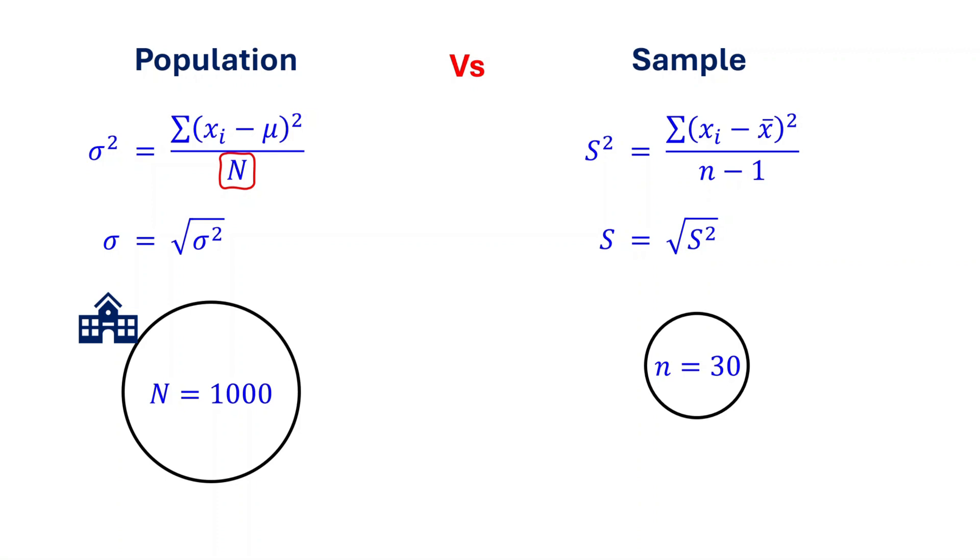Capital letter N represents the population size, which is the total number of data points in the population. Small letter n represents the sample size, which is the total number of data points in the sample. Sigma represents the population standard deviation, which is the square root of the variance.